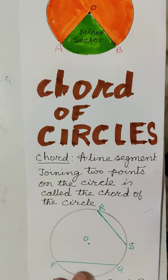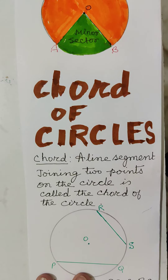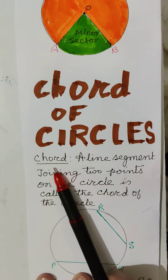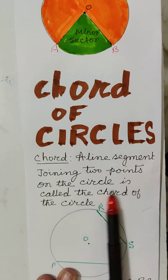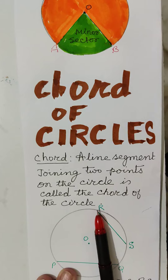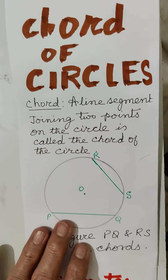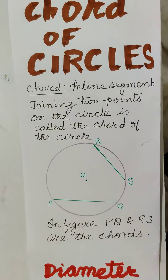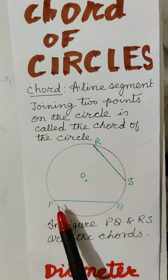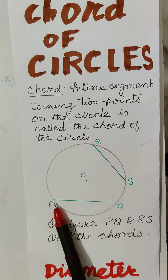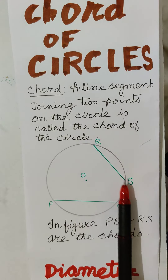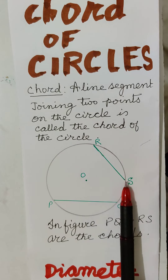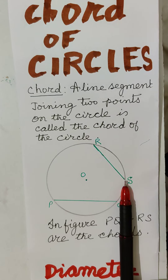Chord of a circle: a line segment joining two points on the circle is called the chord of the circle. There are two chords in this figure. Points P and Q — the line joining P and Q is a chord. Points R and S — the line joining RS is also a chord of the circle.